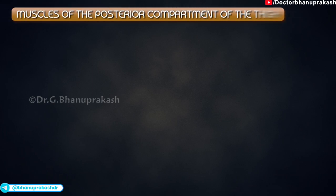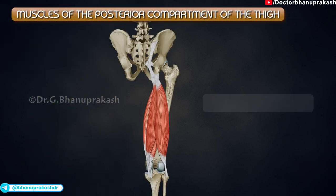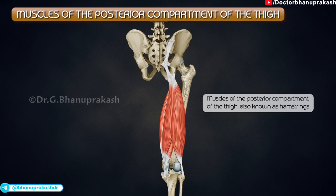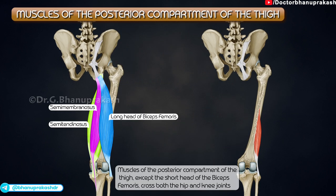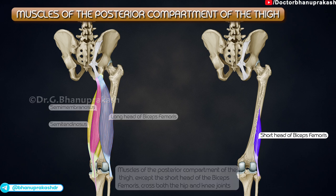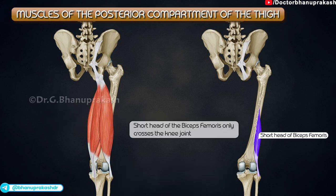The muscles of the posterior compartment of the thigh are often referred to as the hamstrings. All the muscles of the posterior compartment of the thigh, except the short head of the biceps femoris, cross both the hip and knee joints. The short head of the biceps femoris only crosses the knee joint.